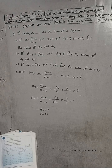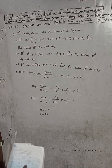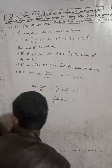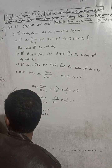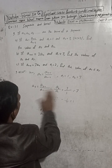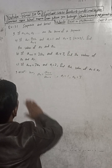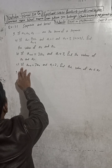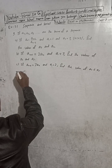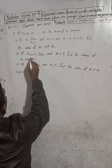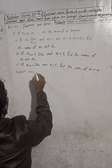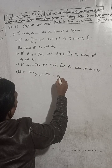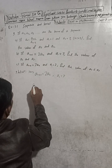Now part B of question 9. Given: a_(n+1) is equal to 2a_n, and a1 is equal to 3. Find the value of a2 and a3.